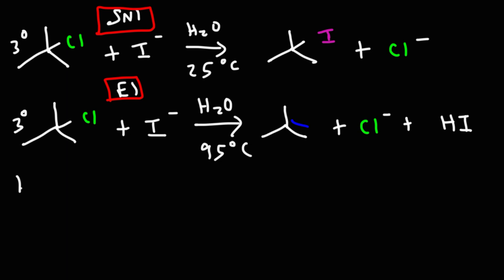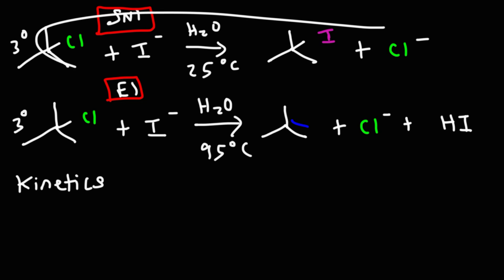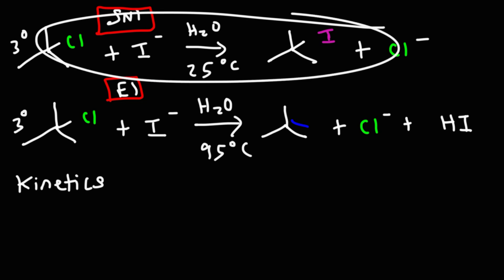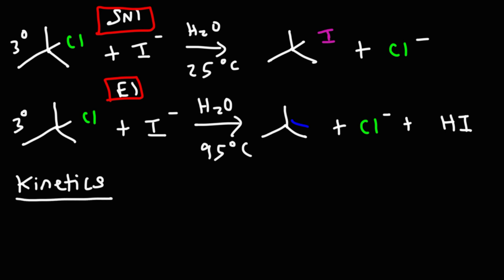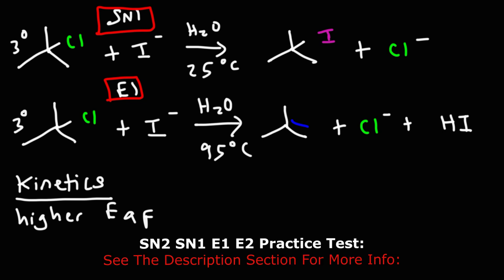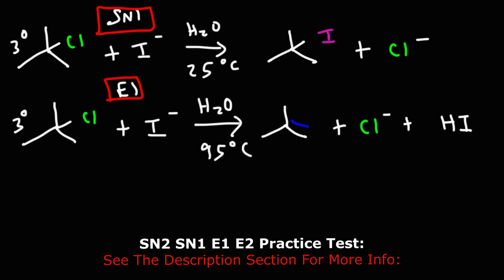Now let's talk about the kinetics, or the speed of the reaction. At low temperature, the reaction is under kinetic control — the SN1 reaction will occur faster at low temperatures. At high temperatures, it's under thermodynamic control and the energetics favor the E1 reaction. The E1 reaction has a higher forward activation energy, and that's why at low temperatures it doesn't proceed — there's a higher energy barrier that must be overcome. An increase in temperature allows us to get over that higher energy barrier. But why is there a higher activation energy for the E1 reaction?